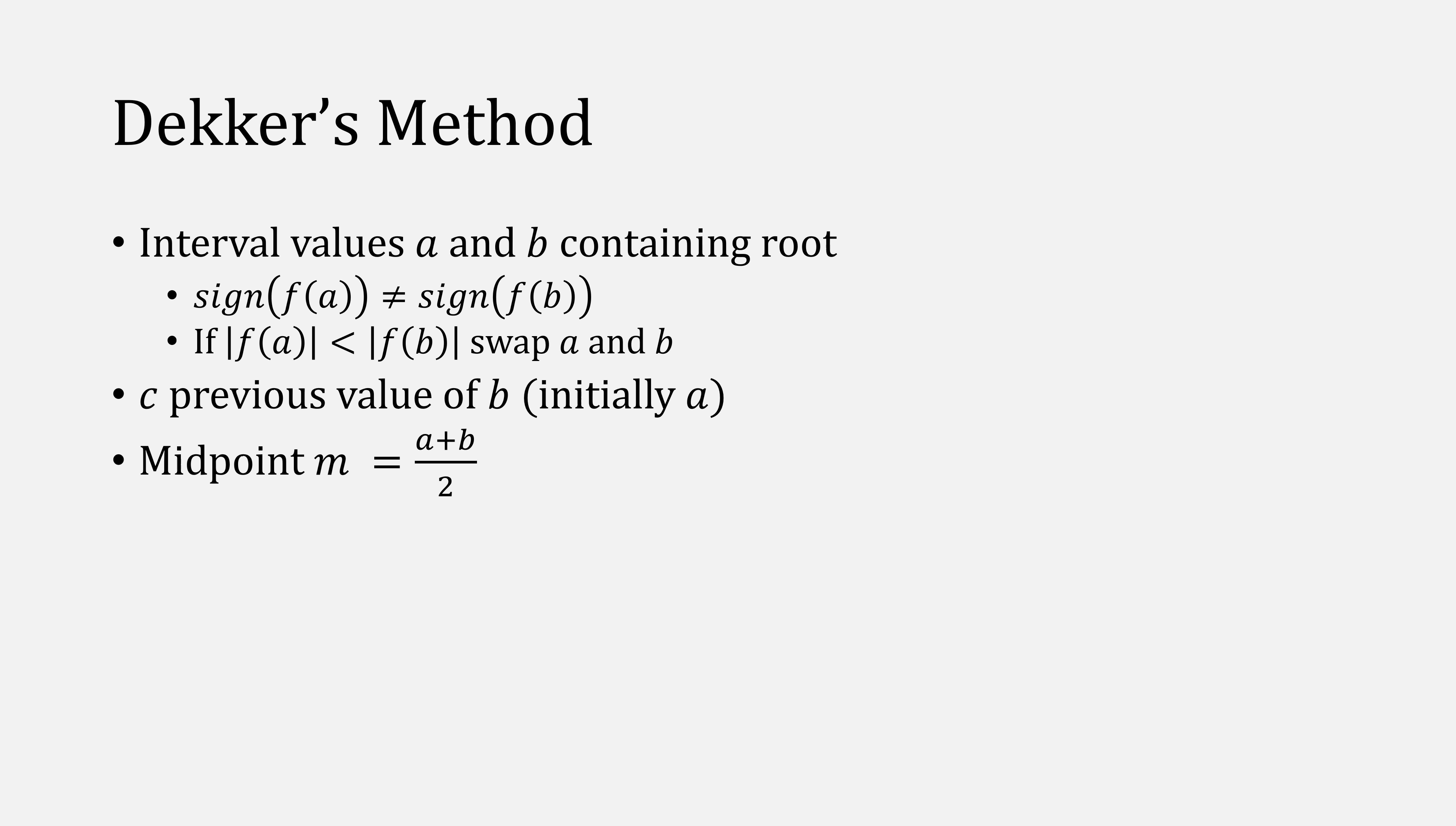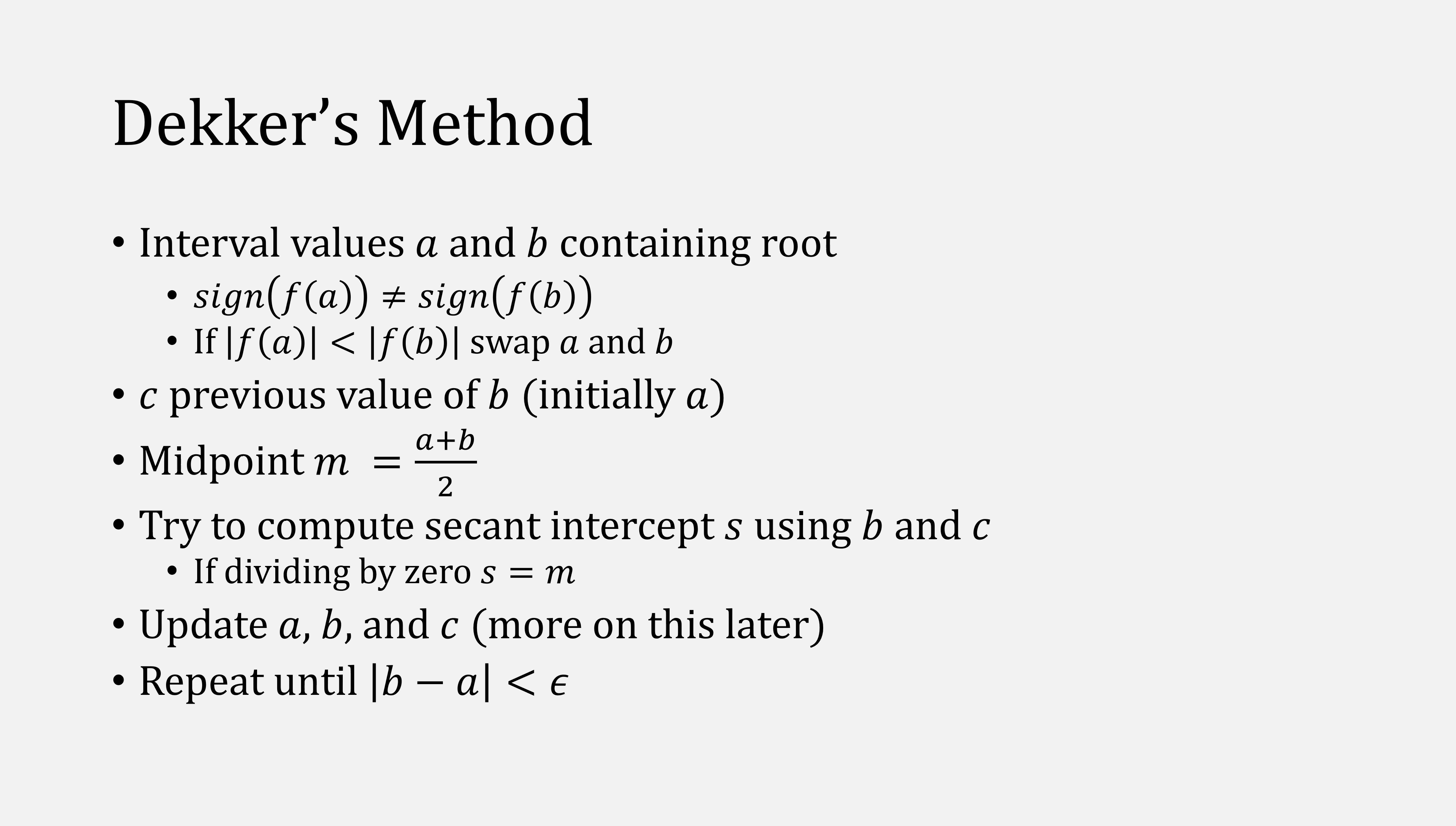Then we compute the midpoint m, and then we also try to compute the secant intercept s using b and c. If we end up dividing by zero, then s will just be m. Afterwards we'll update a, b, and c. Talk about how to do this right now. Then we repeat the process until the absolute value of b minus a is less than some epsilon.